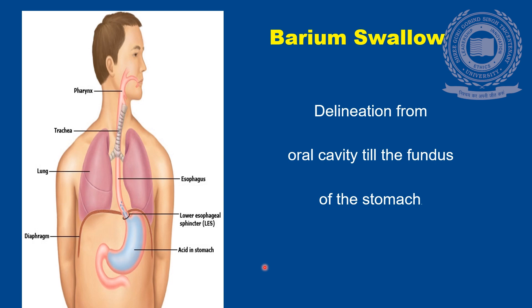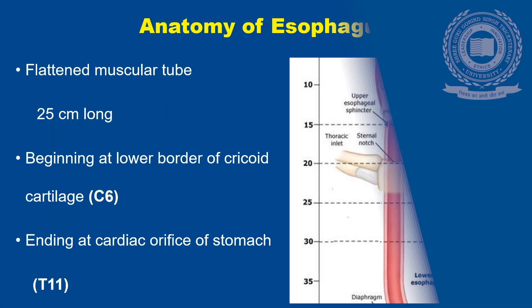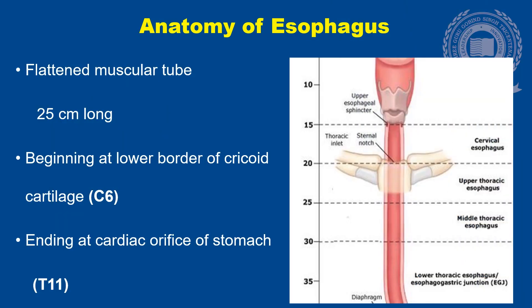Barium Swallow involves delineation from the oral cavity till the fundus of the stomach. Regarding the normal anatomy of the esophagus: the esophagus is a flattened muscular tube which is 25 cm long. It begins at the lower border of the cricoid cartilage, that is at the C6 vertebral level, and ends at the cardiac orifice of the stomach, which is at the T11 vertebral level.